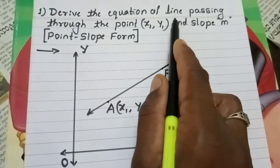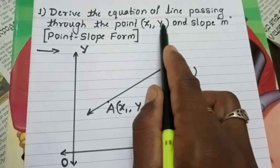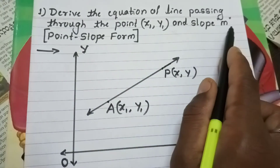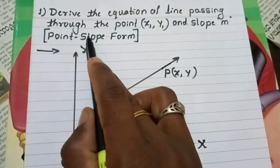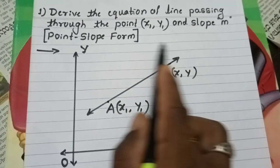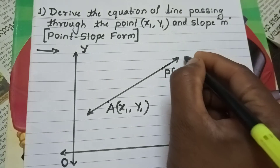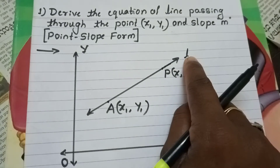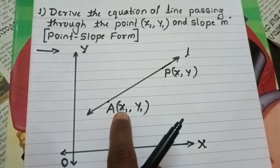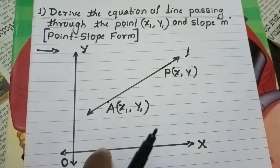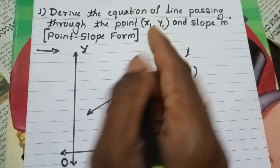Derive the equation of line passing through the point (x1, y1) and slope m. This is called point-slope form. Consider a diagram. The line L is passing through a point (x1, y1) and having slope m.